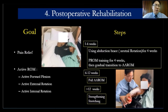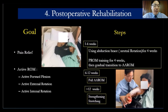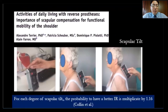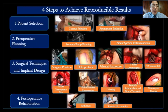For post-op rehabilitation, the goal is pain relief at the first stage. For the first six weeks, I treat this patient like a massive cuff tear — I put the patient in an abduction brace. Delayed rehabilitation starts after six weeks, and strengthening exercise begins after 12 weeks. Also, don't forget to train the periscapular muscles and scapular stabilizers, because that can improve internal rotation.